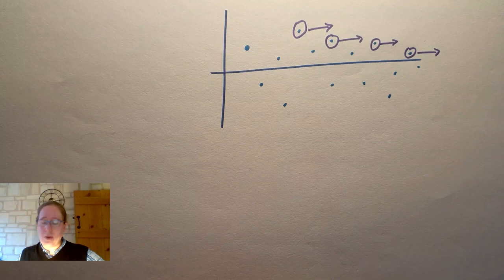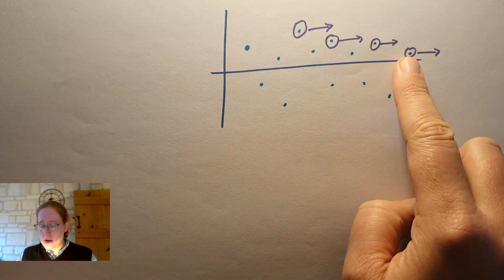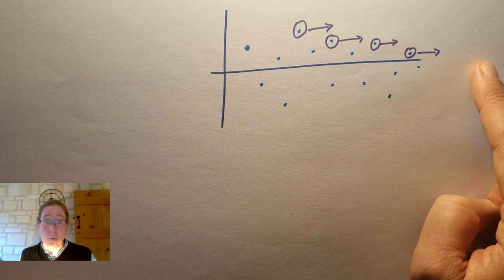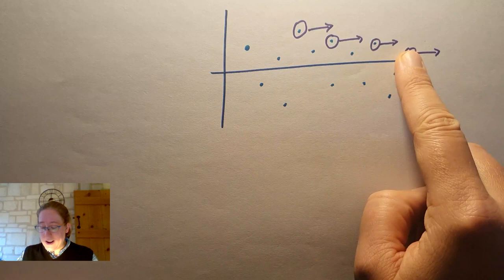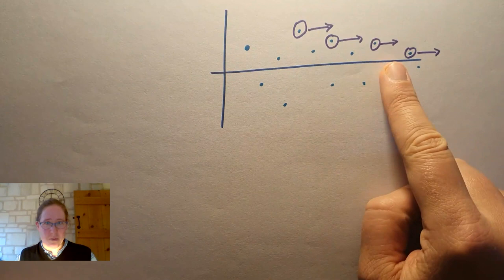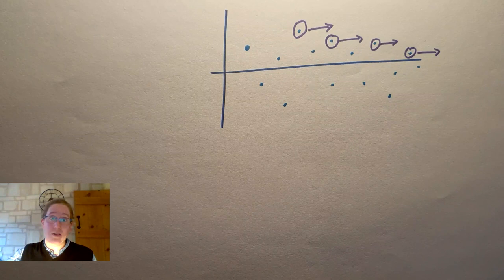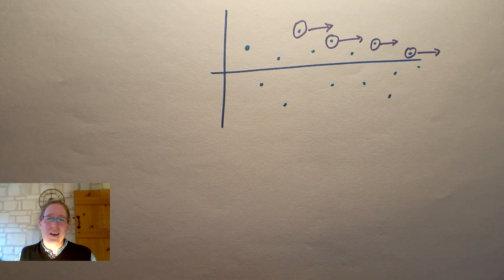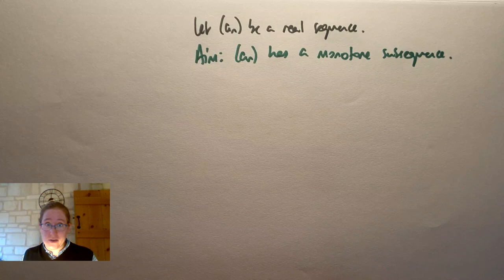And what we're going to do to prove the scenic viewpoint theorem, to show that our sequence has a monotone subsequence, is to think about two cases. So one case is where there are infinitely many peaks, and we will argue that they must form a decreasing sequence. So you might be able to see from the picture I've drawn already why they would form a decreasing sequence. The other case is where there are only finitely many of these peaks. And that means that after some point, no point is a peak. And so there's always a later term of the sequence that's larger, and that's going to allow us to argue that there's an increasing subsequence. So that's the kind of executive summary of the proof. I will write that out carefully now.